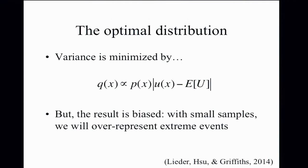Within this framework we can ask what we should choose for distribution Q. You can show that if you care about minimizing the variance of your estimator, the optimal distribution to sample from is Q proportional to P multiplied by the absolute value of the utility. This means the sampling distribution should pay attention to both the probability of an outcome and the absolute value of its utility. You should generate samples from a distribution biased in exactly the way people are biased — overweighting extreme events like shark attacks because of their high disutility, despite low probability.